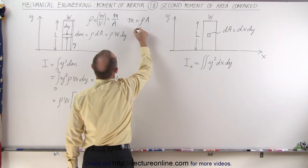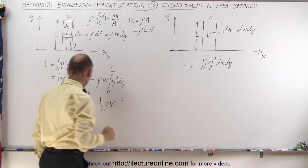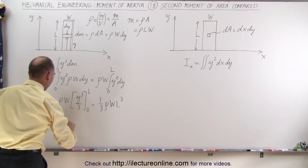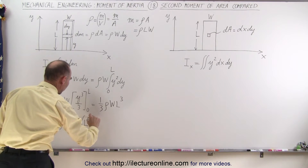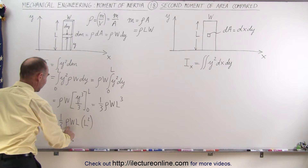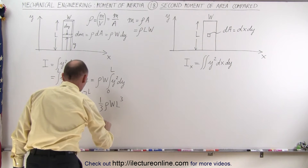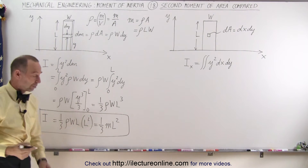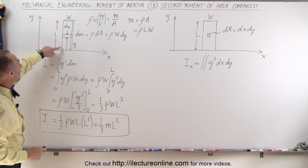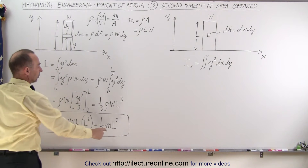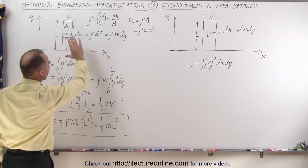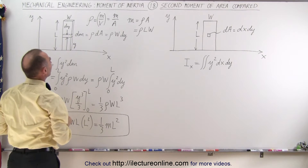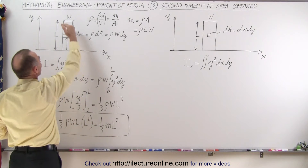We simplify by recognizing that mass equals density times area, which equals density times length times width. So we can write the moment of inertia as (1/3) × density × W × L × L². Since density times width times length equals the mass of the object, this becomes (1/3)ML². This is the legitimate equation for the moment of inertia of this object rotating about the x-axis from one end.